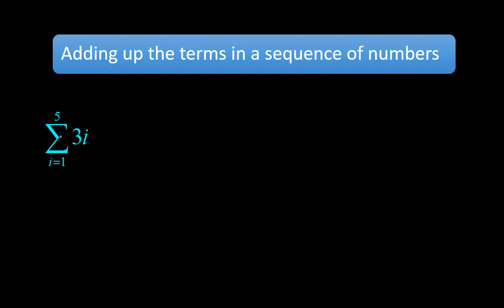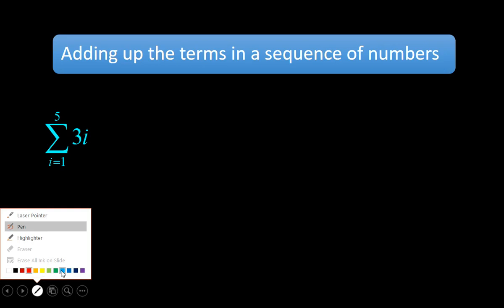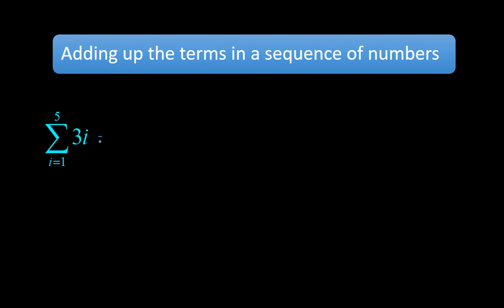If I have the summation, that's how we read this, the summation from 1 to 5 of 3i. That means we're starting with 1 being plugged in. We're going all the way up to 5. So if I do this by hand, this is where we start and this is where we finish.